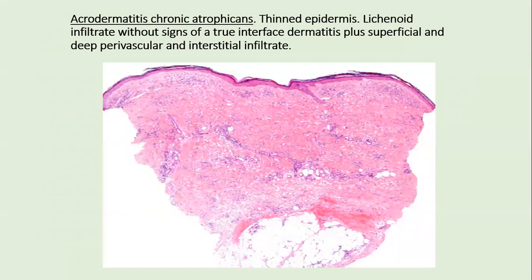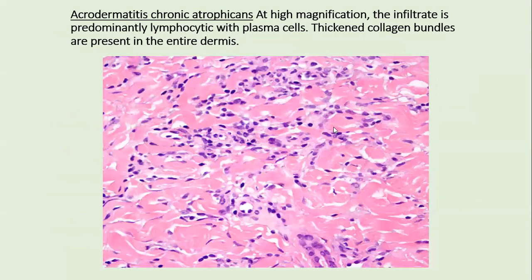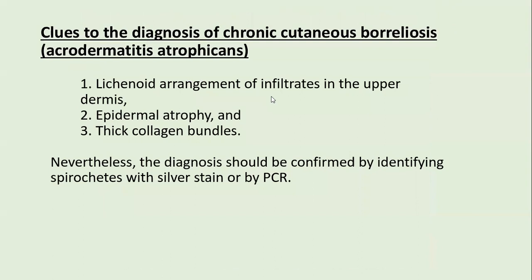Histologically, acrodermatitis chronica atrophicans shows thin epidermis with flattened rete ridges, lichenoid infiltrate without true interface change, and superficial and deep perivascular lymphocytic infiltrate predominantly of lymphocytes and plasma cells. Thick collagen bundles are present throughout the dermis. Clues to diagnosis include lichenoid arrangement of infiltrate in upper dermis without interface change, epidermal atrophy, and thick collagen bundles. Diagnosis must be confirmed by identification of spirochetes with silver stain or by PCR.